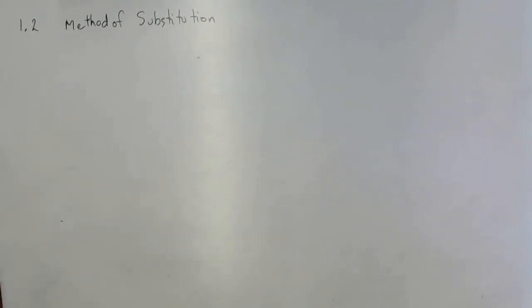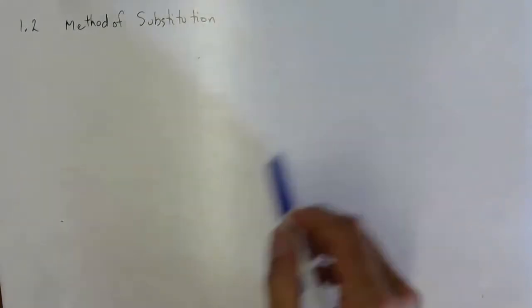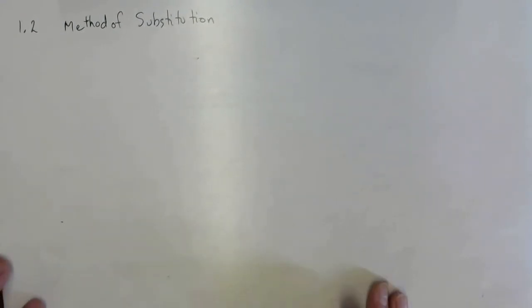Alright ladies and gentlemen, 1.2 Method of Substitution. So we've been solving linear systems by graphing — you graph the lines and see where they intersect. That's great if the solution x, y are both whole numbers and easy to see on graph paper, but it's really not the most efficient way.